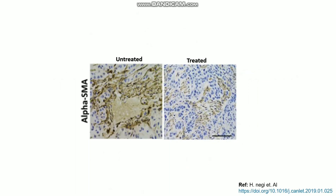Here I want to show an untreated tissue stained with alpha-SMA using an alpha-SMA specific antibody. As you can see, the brown color indicates the presence of alpha-SMA. In the untreated group there is a lot of alpha-SMA, but in the treated group alpha-SMA is significantly reduced. This is all about the IC staining principle.